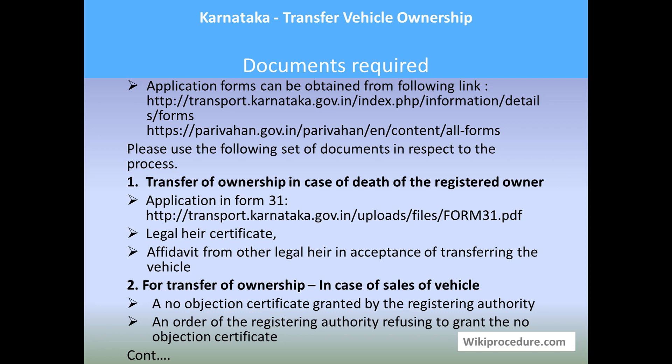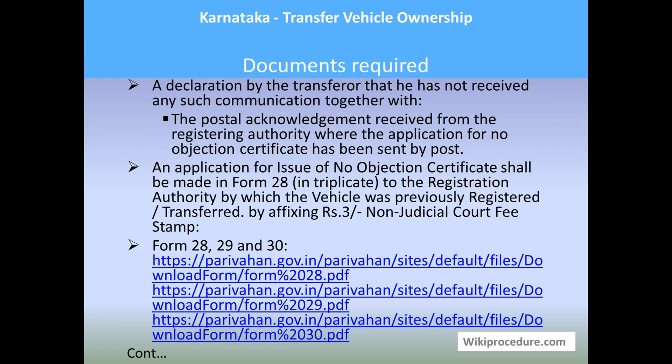The second case is for transfer of ownership in case of a sale. If the owner decides to sell his vehicle, a No Objection Certificate granted by the registering authority has to be submitted, or an order from the registering authority refusing to grant such NOC, or a declaration by the transferor that he has not received any such communication, together with the postal acknowledgement received from the registering authority where the application for NOC was sent by post. An application for issue of a No Objection Certificate is Form 28, and you have to affix a three-rupee non-judicial court fee stamp on it.